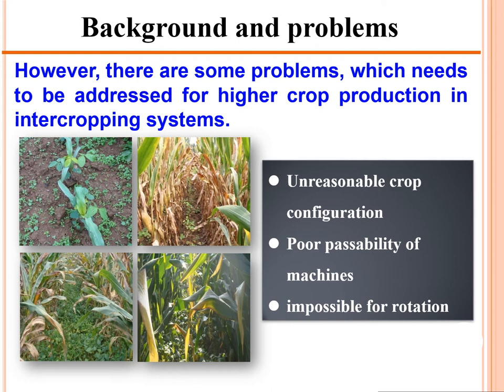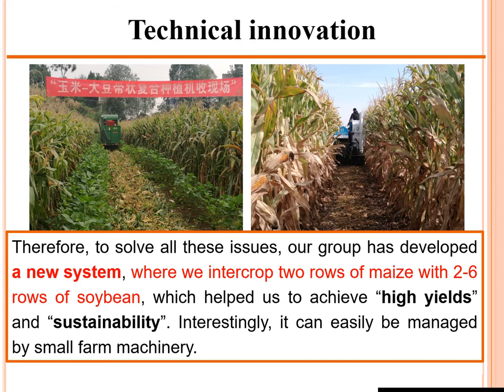There are some problems that need to be addressed for higher crop production in intercropping, including unreasonable crop configuration and poor mechanization. To resolve these issues, our group developed a new cropping system where we intercrop two rows of maize with two to six rows of soybean, which achieves high yields and sustainability. Importantly, it can easily be managed by small farm machinery.